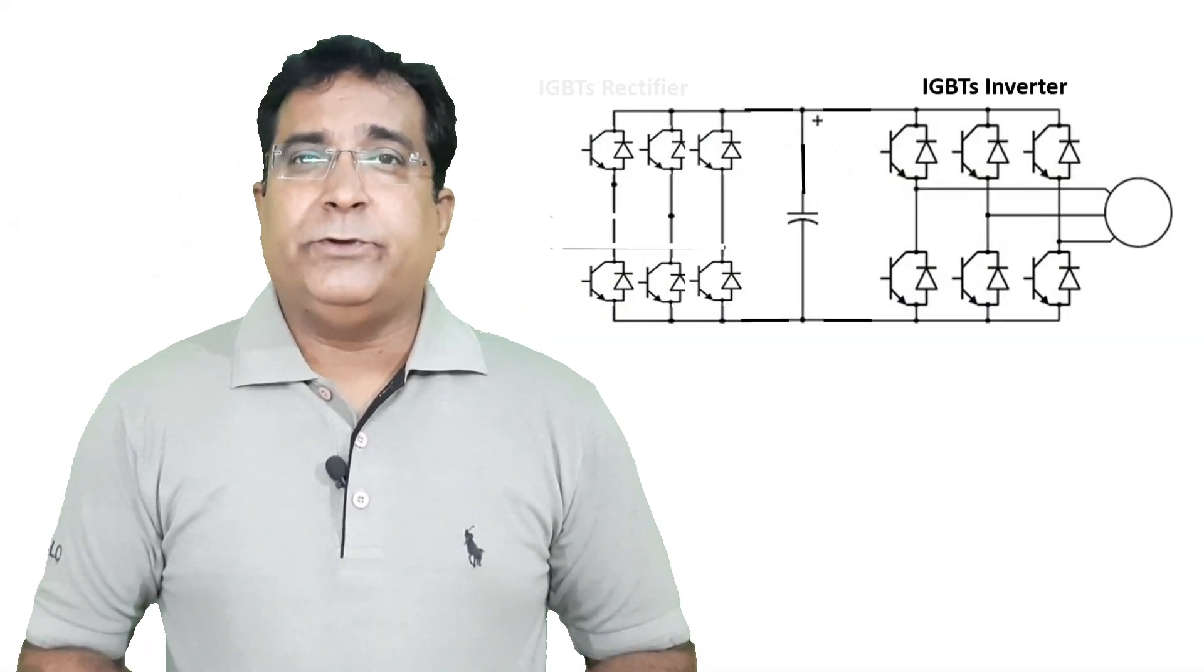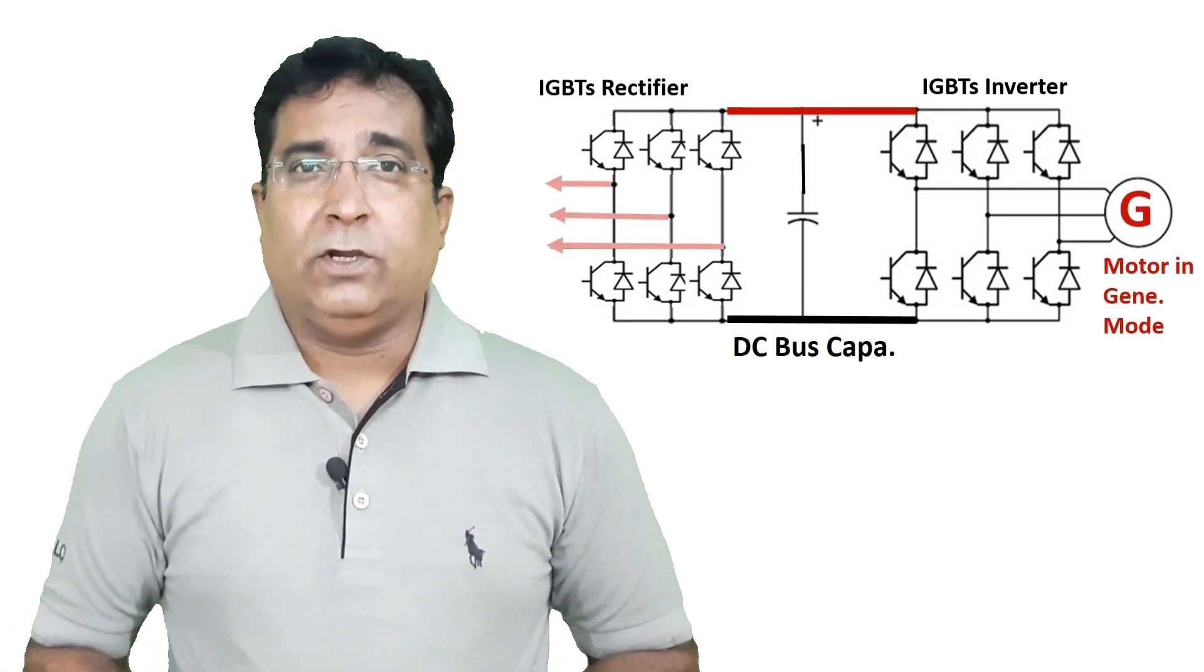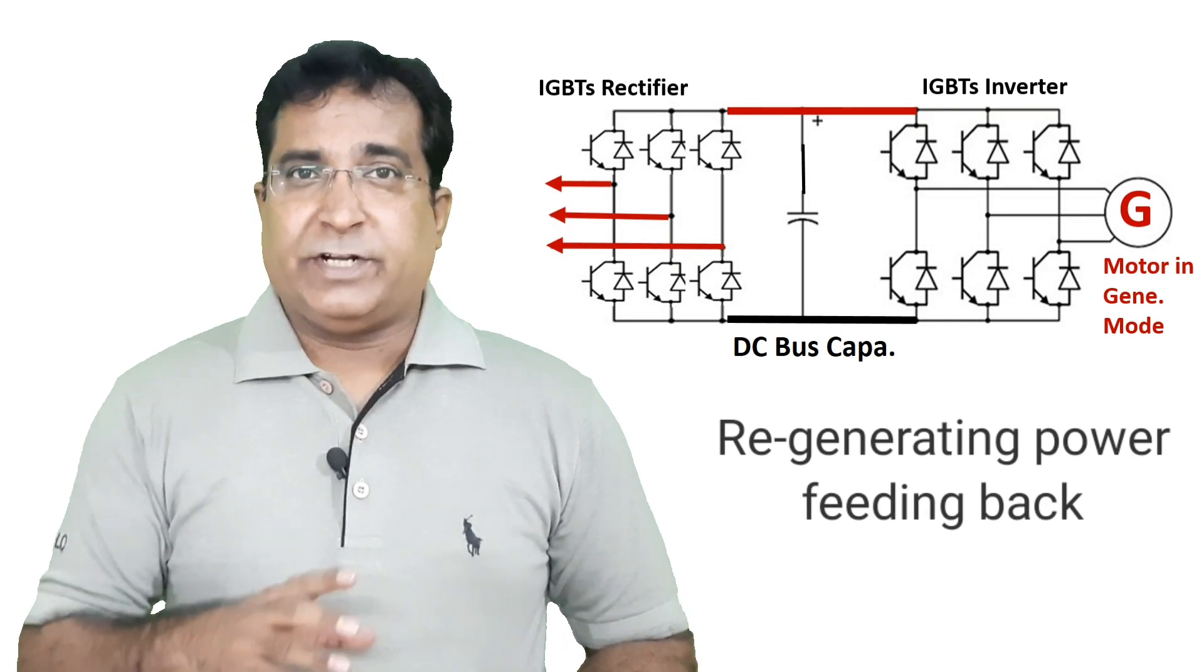Rather wasting this energy as heat it is better to feed this energy back to power system. But for this application you need a VFD that have controlled bridge rectifier built with IGBT, so that reverse power flow can take place. A VFD with diode bridge is unidirectional, you don't have choice to feed back this energy. So you are left with the option of wasting energy as heat.